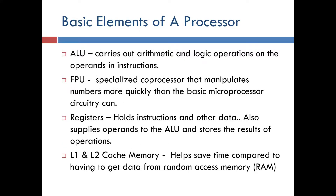The ALU carries out arithmetic and logic operations on the operands and instructions. The FPU is a specialized coprocessor that manipulates numbers more quickly than the basic microprocessor circuitry can. Registers hold instructions and other data, supply operands to the ALU, and store the results of operations. L1 and L2 cache memory helps save time compared to having to get data from random access memory.